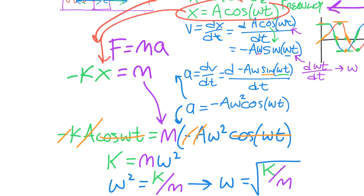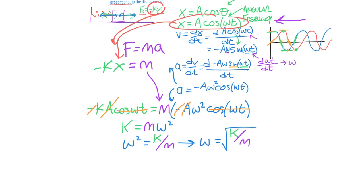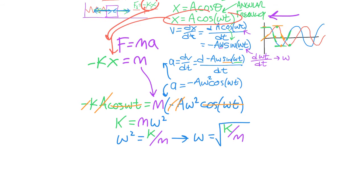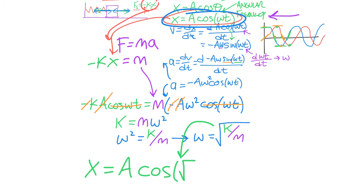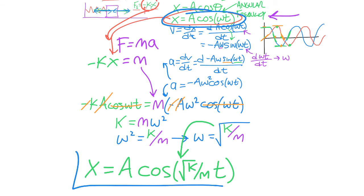You might ask: what do we do with that? We're trying to find the position function. Way back we had x = A cosine(ωt), and now we know ω = √(k/m). So the final position function is x = A cosine(√(k/m) · t). That is the position function of a mass on a spring oscillating back and forth.